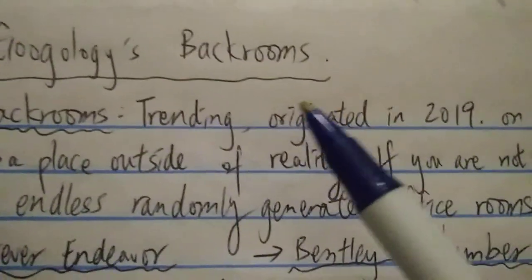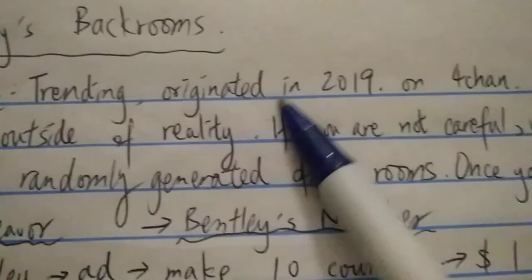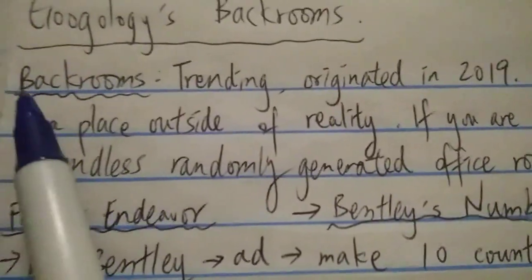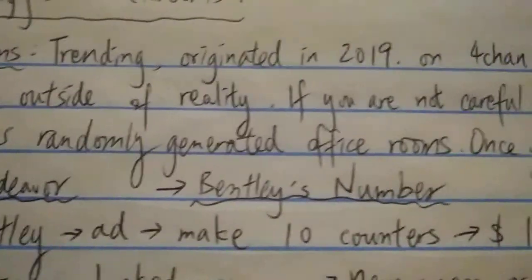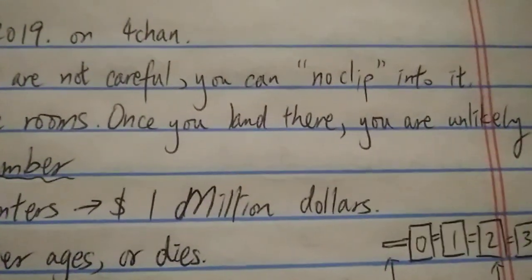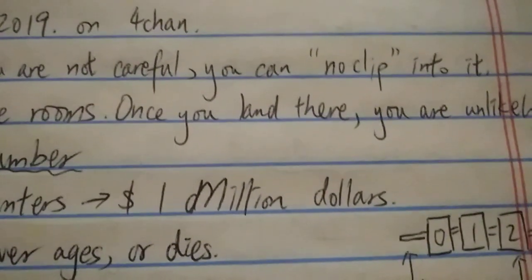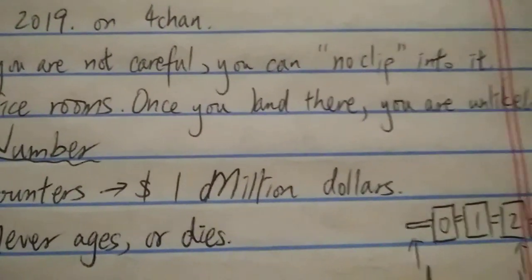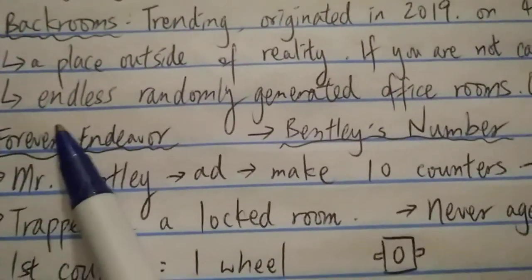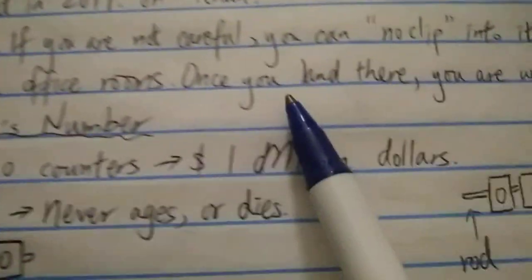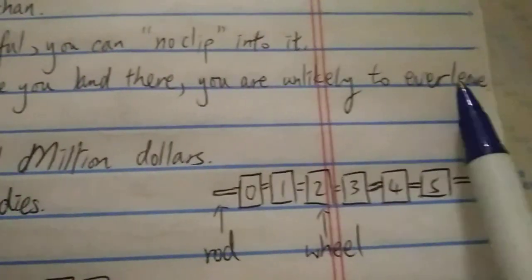Basically it's an idea or story that originated in 2019 on the website 4chan. It's about a place outside of reality, and if you're not careful you can noclip into it. Noclip is a video game terminology - basically there's a glitch and you can suddenly go inside a place you're not supposed to go. The backrooms is an endless, supposedly endless randomly generated office rooms, and once you land there you're unlikely to ever leave.